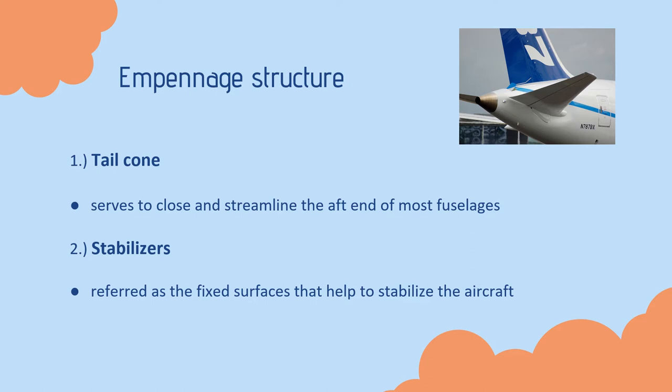Empennage structure. The first one is the tail cone. The tail cone serves to close and streamline the aft end of most fuselages.